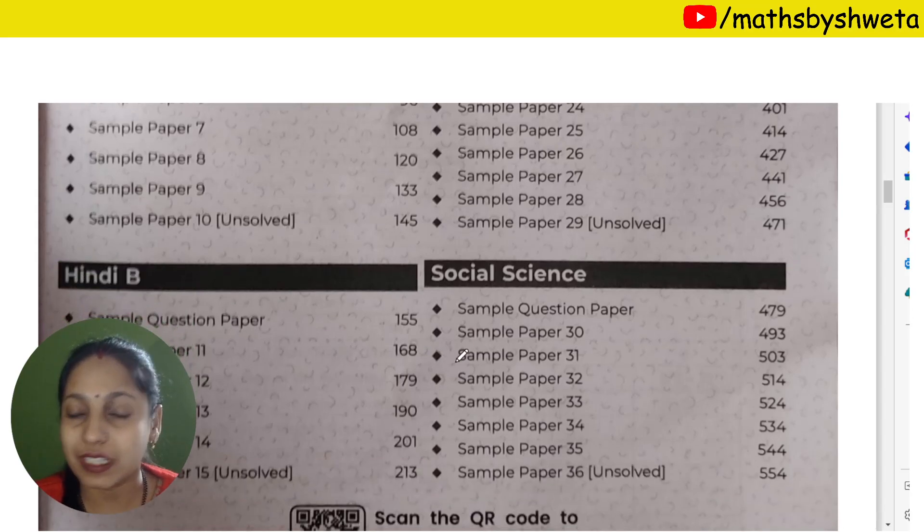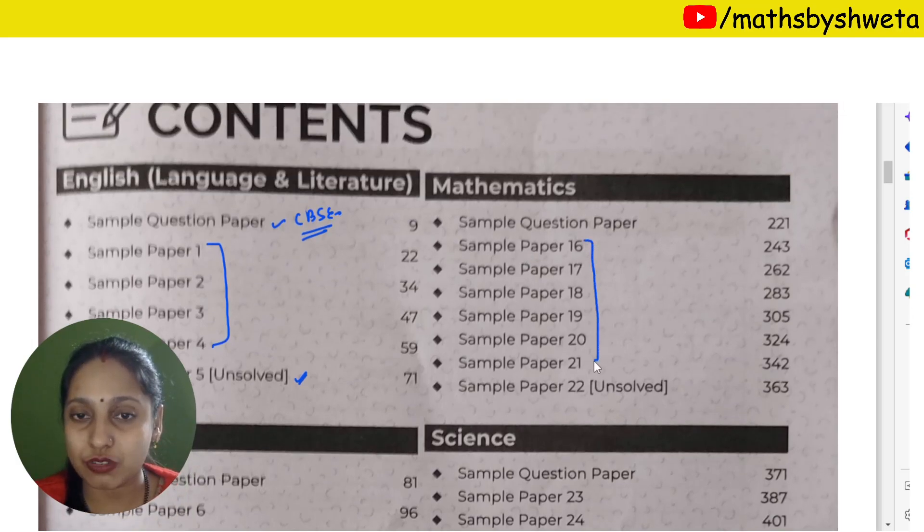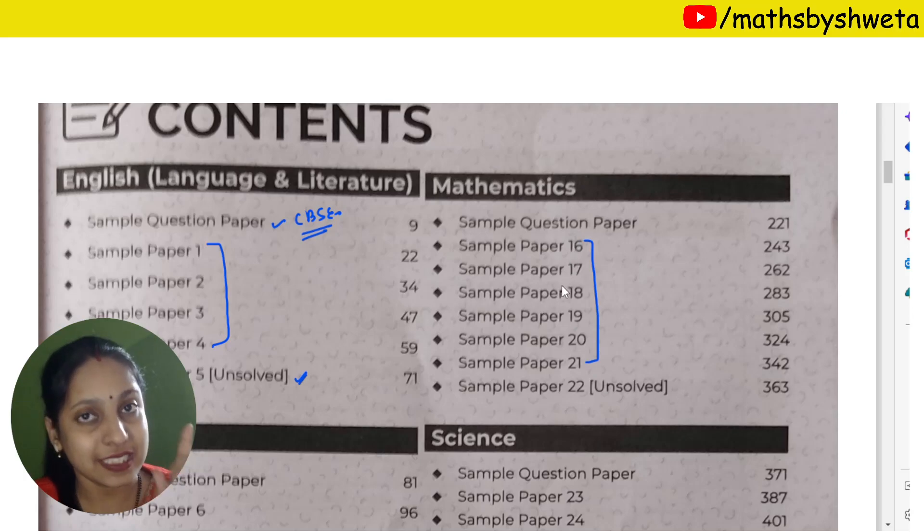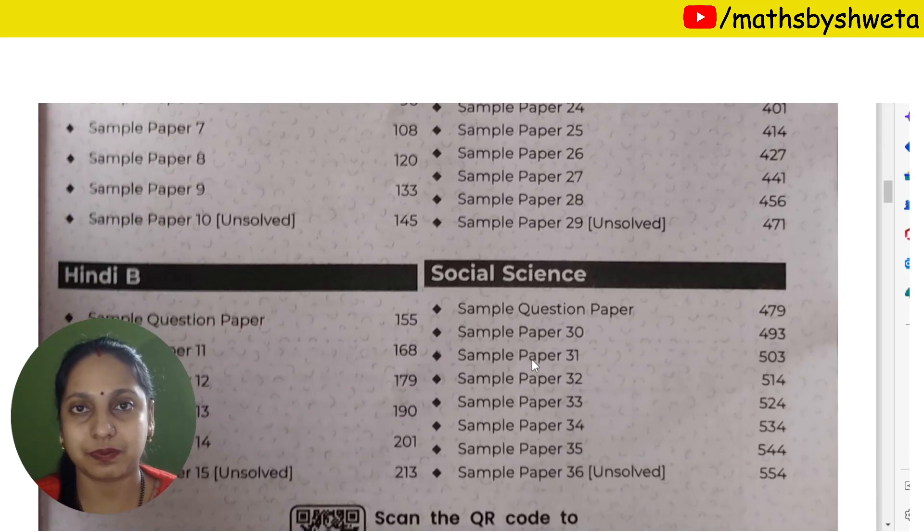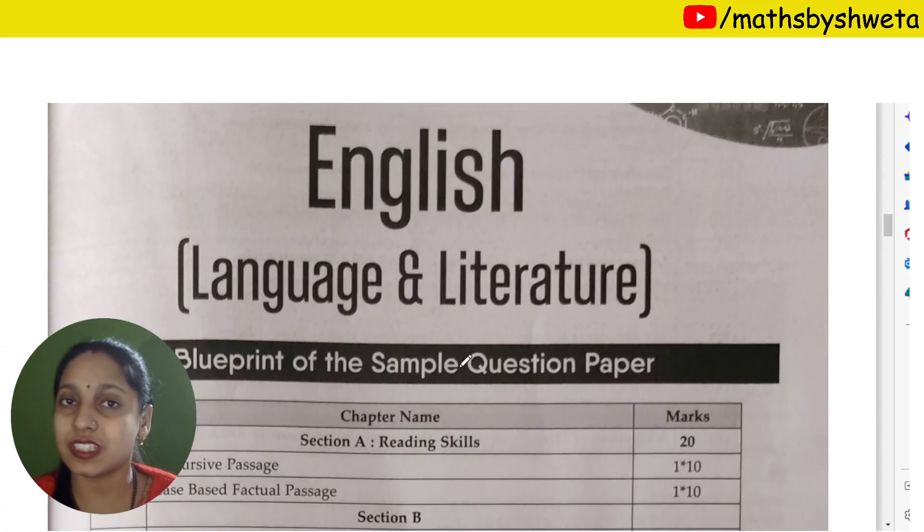The first paper is a subject which is a CBSE sample paper, and the rest are solved and one is unsolved. If you do 8 or 9 sample papers, especially Maths, then you can easily do this paper. This is new pattern based. Same for Science, same for SST. This is a good book. I will show you the link below in the description.